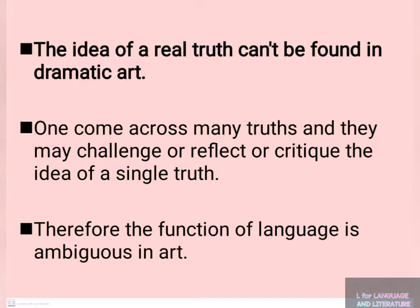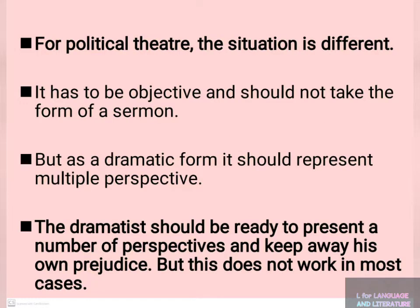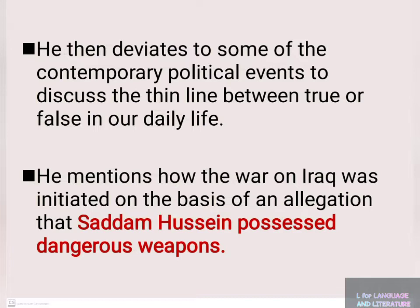Therefore the function of language is ambiguous in art. We cannot find truth in dramatic art because the language is ambiguous. That is why Pinter says it is important for a citizen to know the truth in real life. He then deviates to some contemporary political events to discuss the thin line between true and false in our daily life.